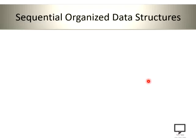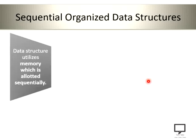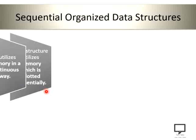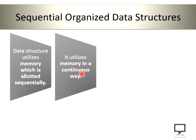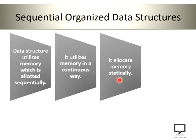Now let's overlook the concept of sequential organized data structures. A data structure that utilizes memory which is allotted sequentially falls under the sequential organized data structure. It is one type of data structure categorized with respect to memory allocation. If the memory is allotted continuously, it is called a sequential organized data structure. It also falls under the static data structure because memory is allotted statically at compile time — whatever space is required is allotted at compilation only.